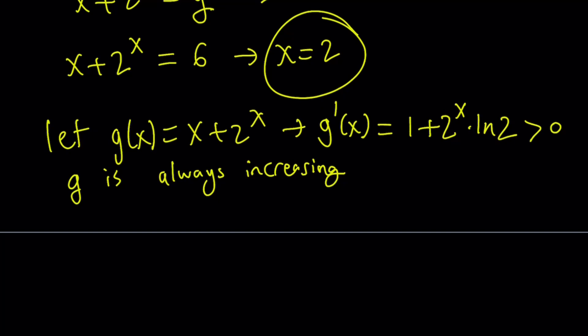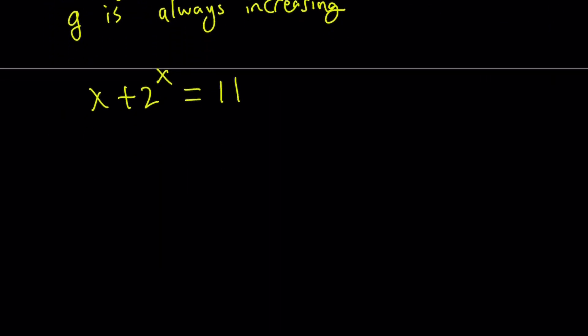So we're going to replace x with 2. And then, let's go ahead and try to find f(11). To find f(11), we're going to set x + 2^x = 11. And then from here we're going to guess our solution again, and x = 3 is going to work. And that's done because we know we don't have any other solutions.